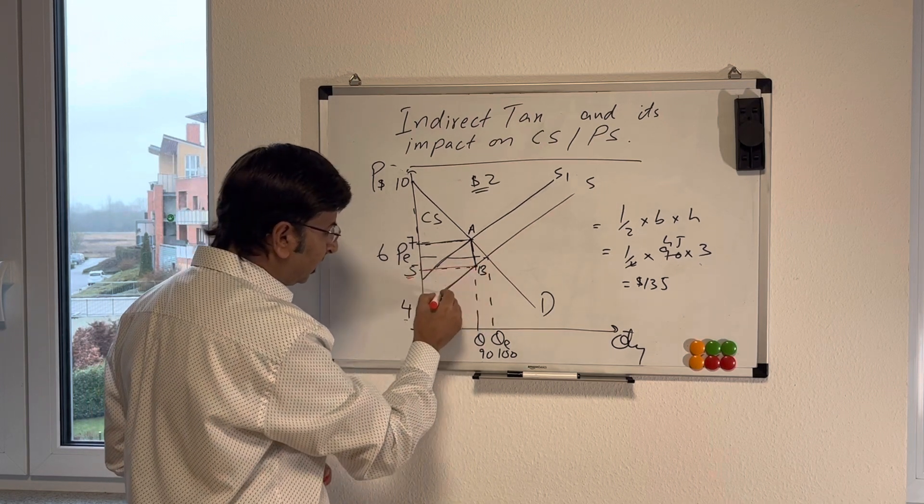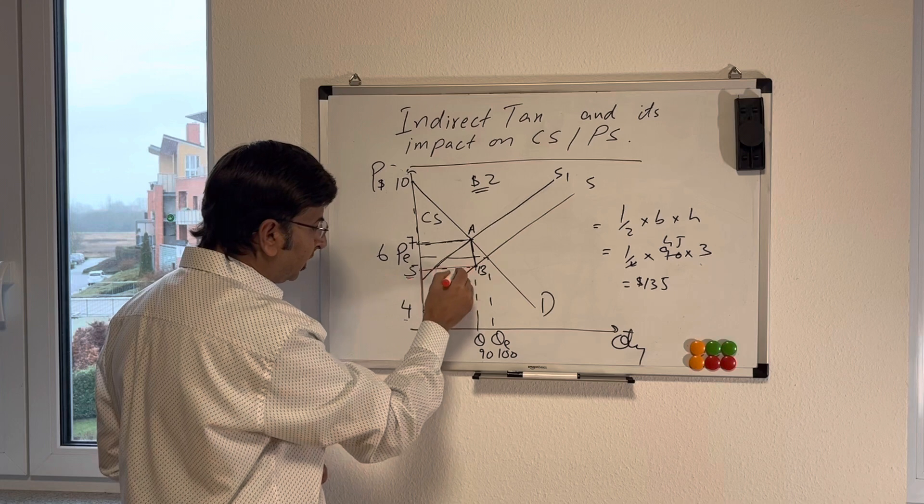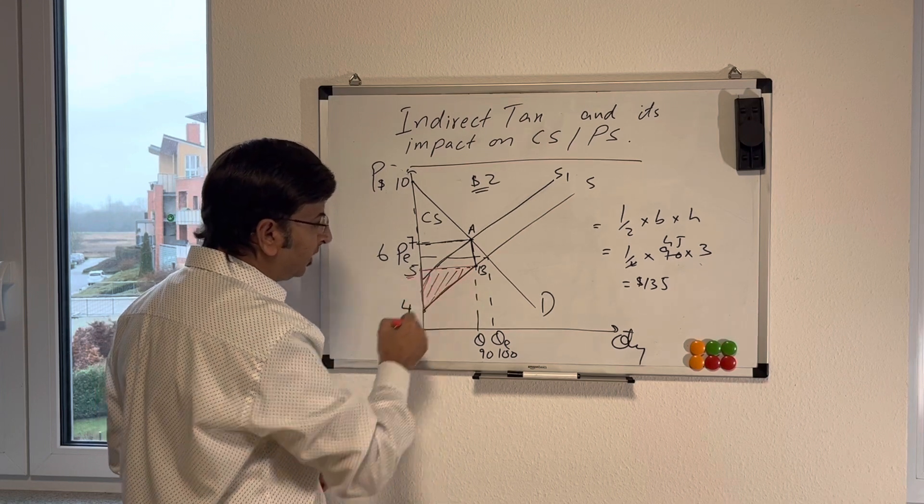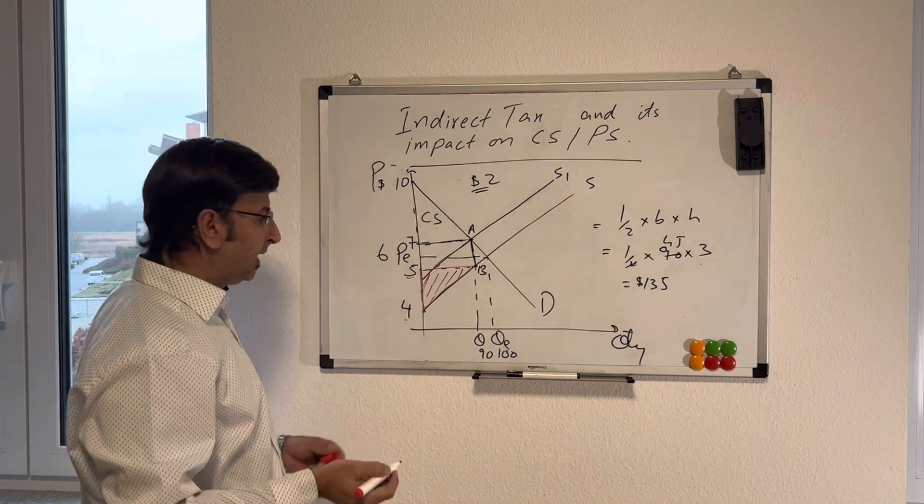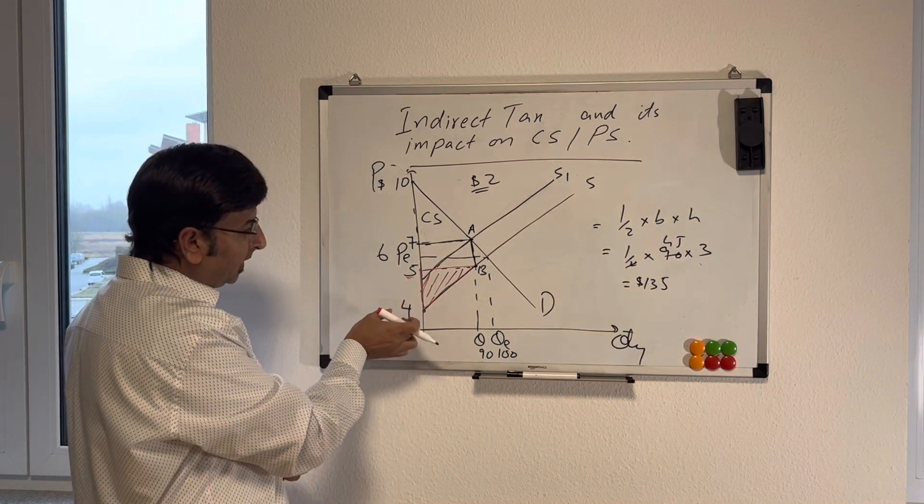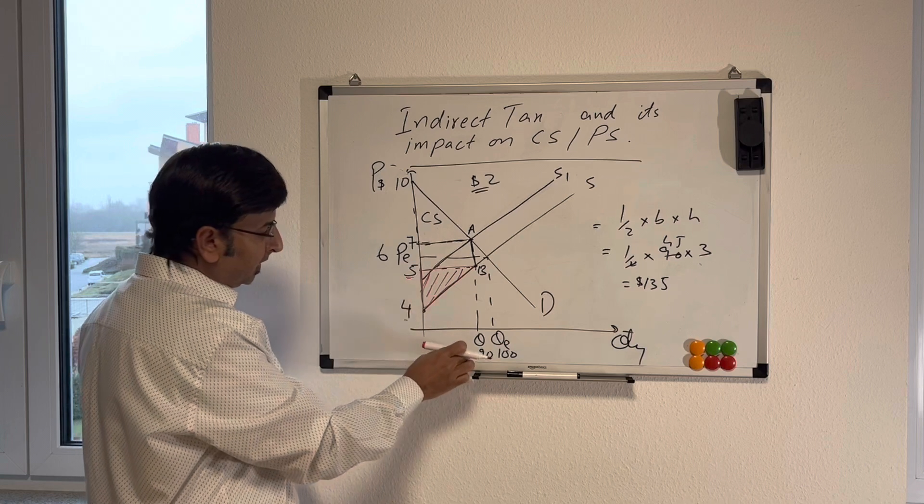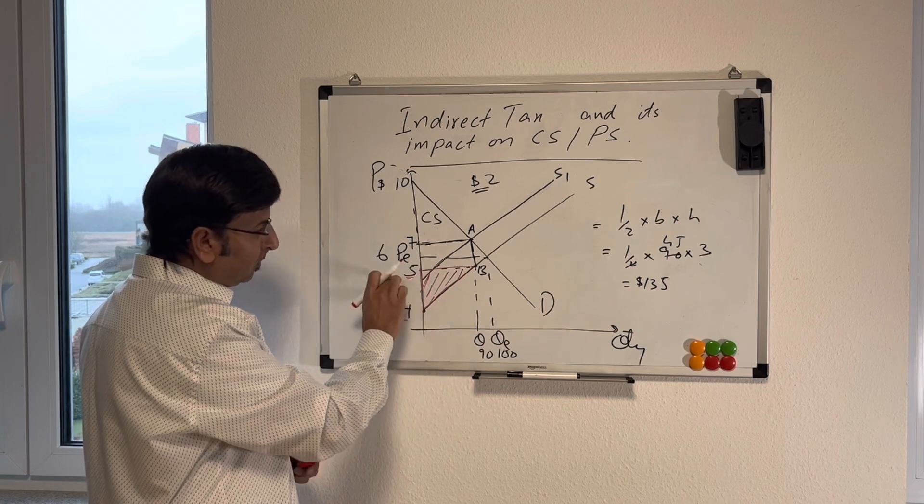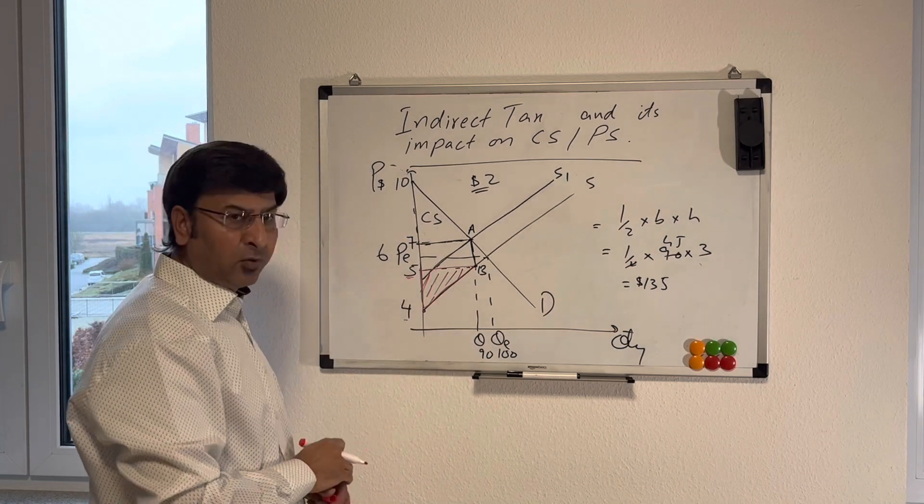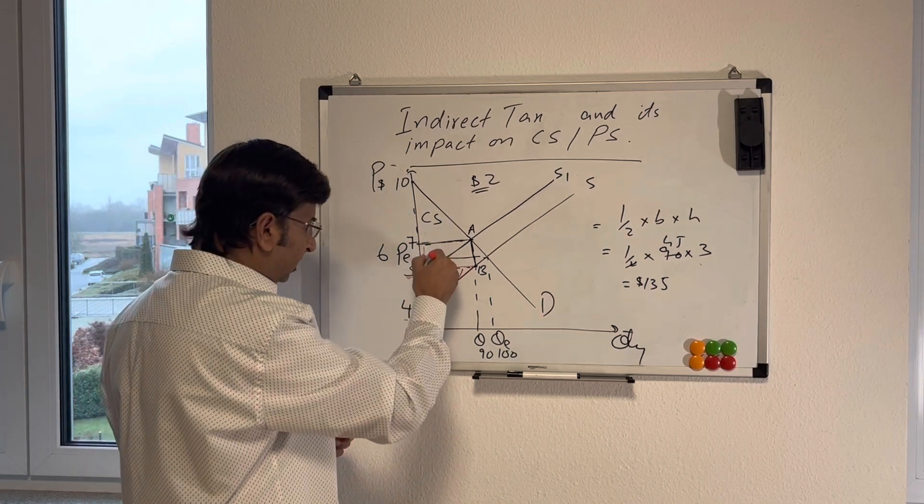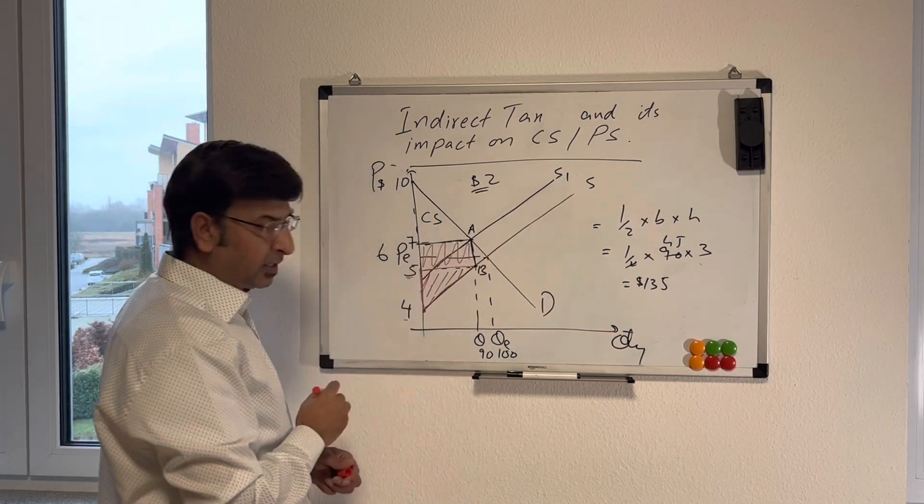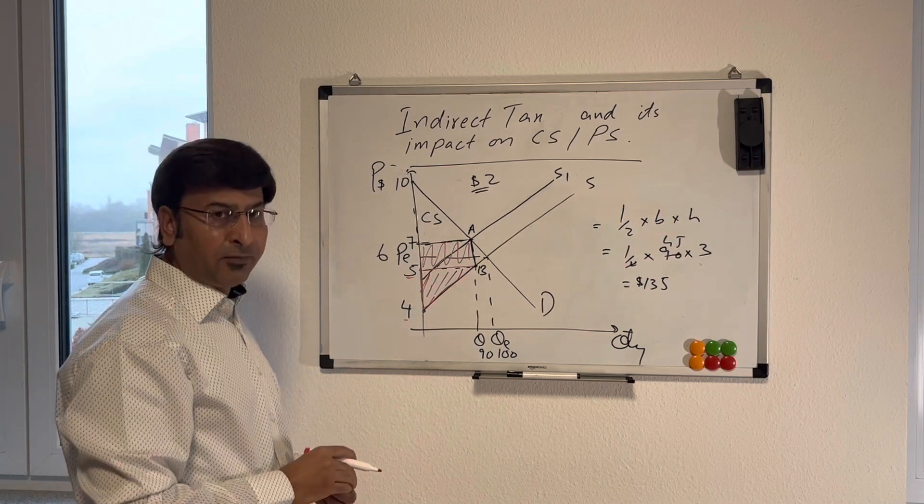After the tax, which means if you need to find it mathematically, that's going to be half times 90 times 1. So that's going to be 45. And the rest of the area, this whole rectangle, is actually the government revenue.